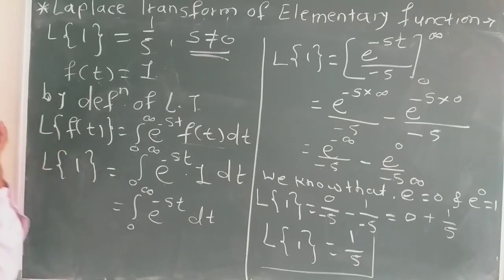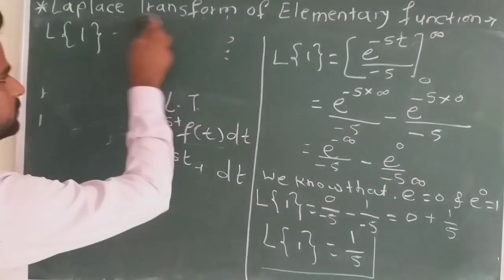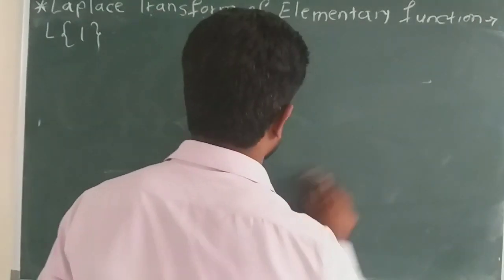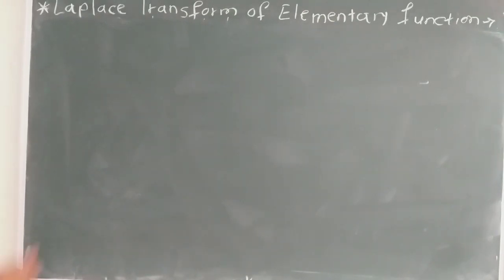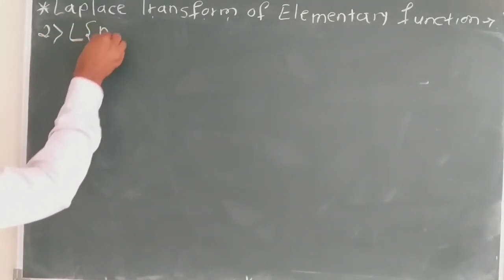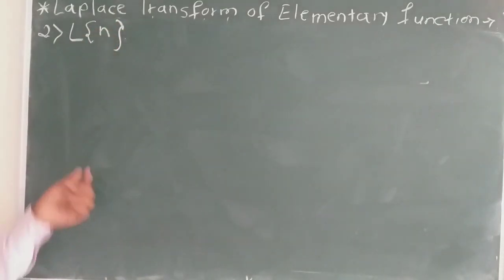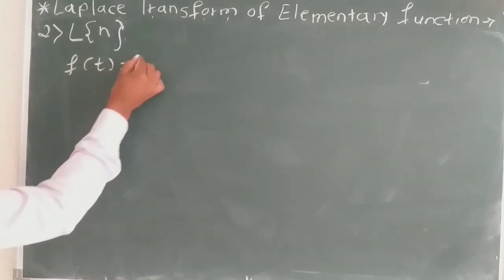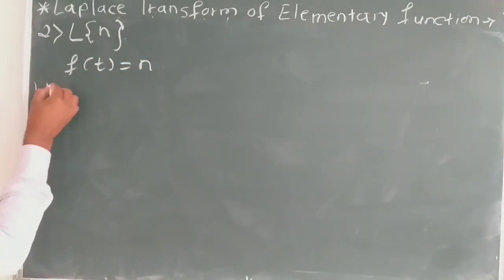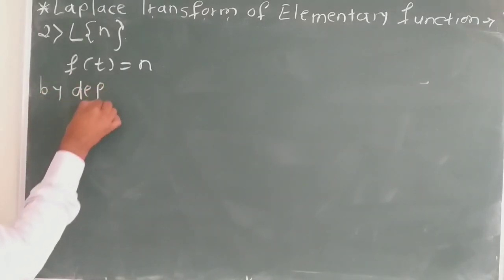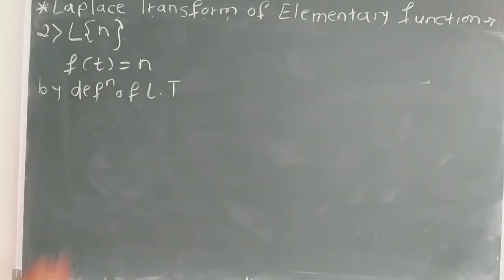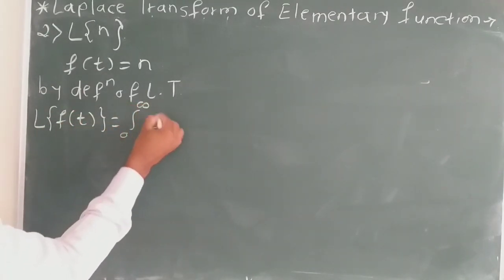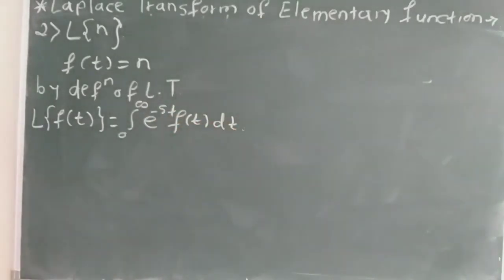Next, our second elementary function is the Laplace transform of n. We have to find the Laplace transform of n. Comparing with the Laplace transform of f(t), we get the value of f(t) equal to n. By the definition of Laplace transform, the Laplace transform of f(t) is equal to integration over 0 to infinity of e raised to minus st, f(t) dt.